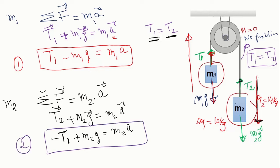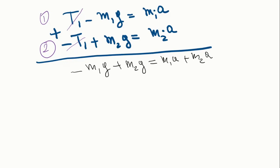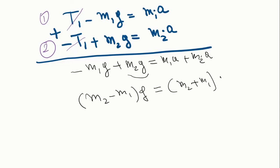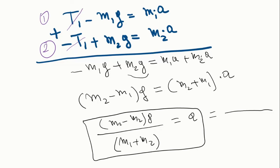If I add these two equations together, the tension terms cancel. Since T1 equals T2 in magnitude because of the massless, frictionless pulley, adding gives: m2g minus m1g equals m1a plus m2a. Factoring: (m2 minus m1)g equals (m1 plus m2)a. Therefore, the acceleration a equals (m2 minus m1) times g divided by (m1 plus m2). This is the formula for the acceleration.